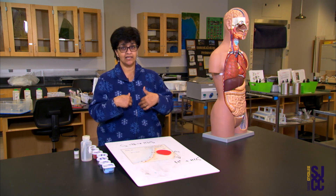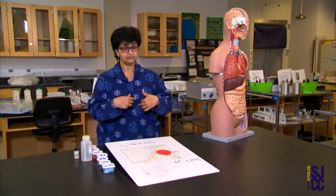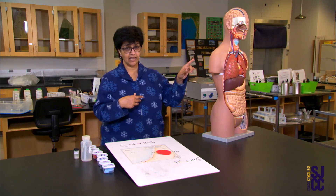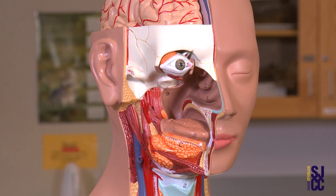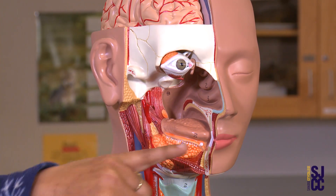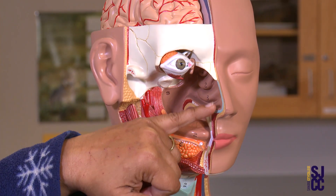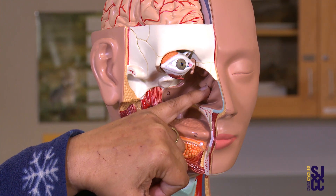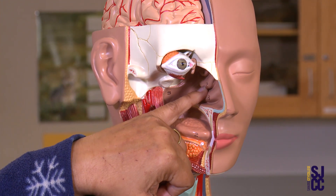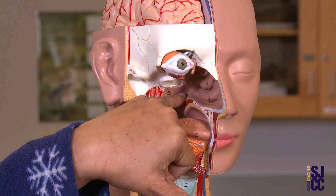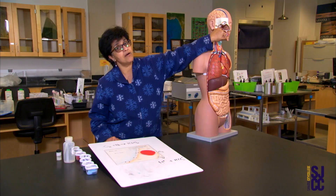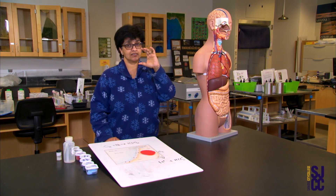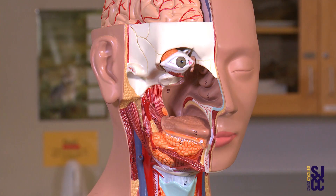Now when we take in air — I'm going to show you the anatomy. When we take in air, the place the air goes in is our nasal cavity, and then it goes behind the mouth where there is a space called the pharynx.